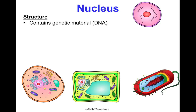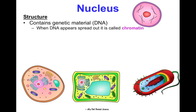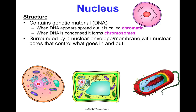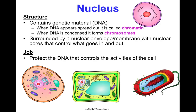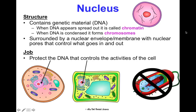The nucleus contains your genetic material — your DNA. When the DNA appears spread out, like a ball of spaghetti, it's called chromatin. When it's condensed into distinct X-shapes or rods, we refer to it as chromosomes — but we're still talking about DNA. The nucleus is surrounded by a nuclear envelope, or nuclear membrane, which has nuclear pores that control what goes in and out, similar to pores in your skin. Its job is to protect the DNA and control cell activities. The nucleus is present in animal and plant cells, but not in prokaryotic cells, where DNA floats freely unprotected.